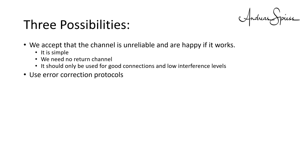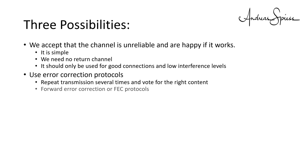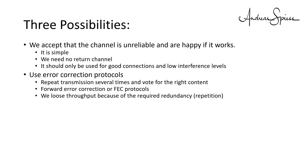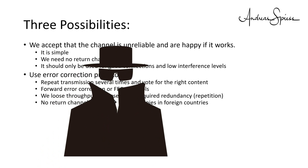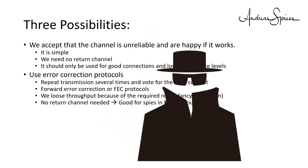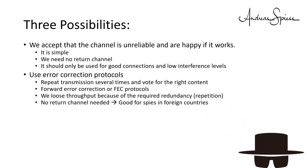The next better solution is to build some error correction into the transmission. A simple one could be to transmit a message three times in a row, and the receiver decides 2-to-1 which is the right content. Systems like that are called forward error correction, or FEC, protocols. Much better protocols were invented and we no longer need to repeat the whole message three times. But one disadvantage remains: we lose throughput because of the required redundancy. I know from first-hand experience that such protocols were used to transmit messages to spies in foreign countries, where it was not possible to establish a return channel without being discovered.